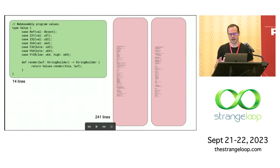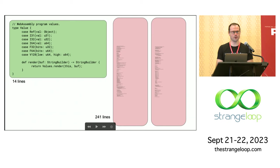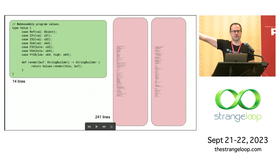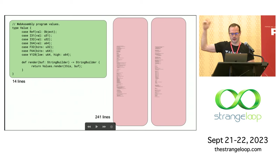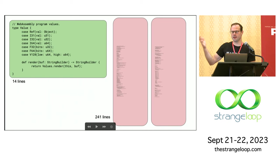Just to give you an idea of where all the lines of code go: 14 lines of code defines all the WebAssembly values in Wizard. This is Virgil syntax for writing an algebraic data type — values can be references, I31s, 32 and 64-bit integers, floating point, and vectors, and they have a way to print them out. The same thing in V8 is 241 lines, because C++ doesn't have ADTs, so you write them by hand with a class, subclasses, a union, and a tagging mechanism.